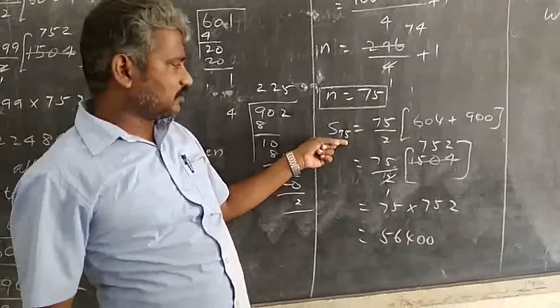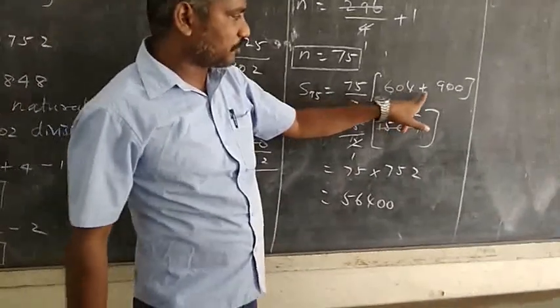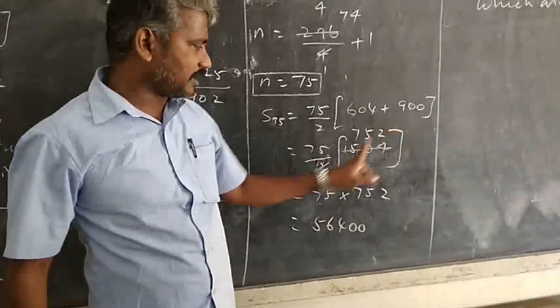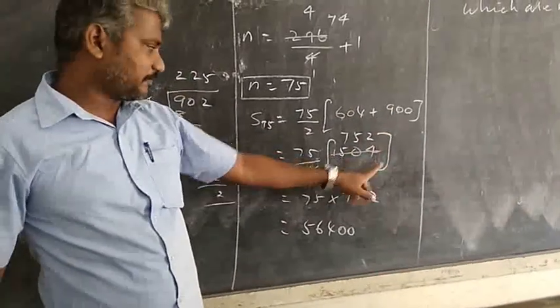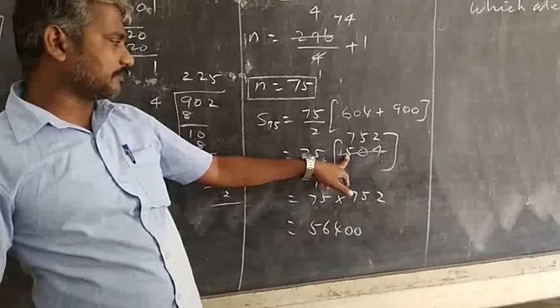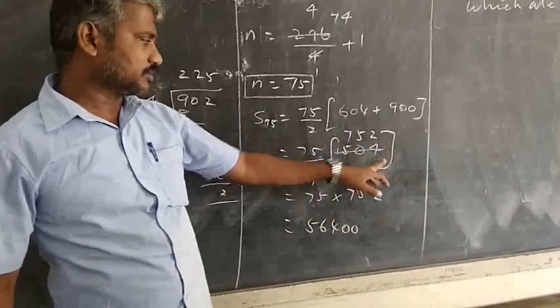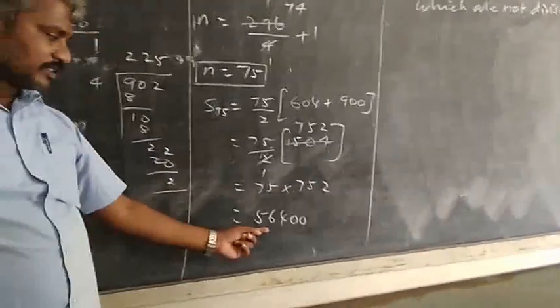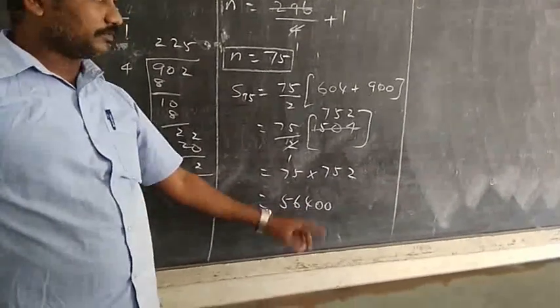75 equals 75 by 2. A value 604 plus 900. So 75 by 2 into this 2, A value 604: 1 times 2 is 4, 7 times 2 are 14, 5 times 2 are 10, 2 times 2 are 4. 75 into 752, this 2 value multiple means 56,400.